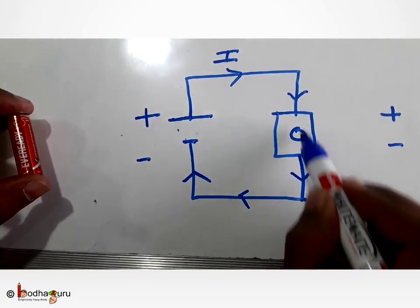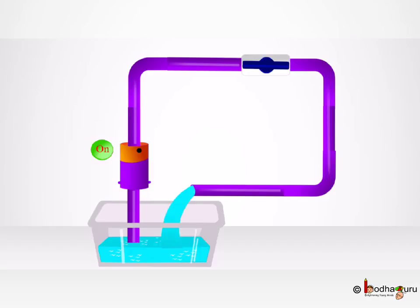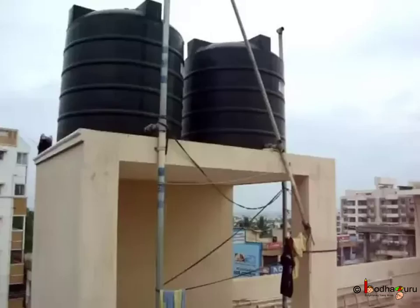So have you thought what makes the electric charge flow? The battery, right? So what did the battery do in this case? Remember our water pipe analogy. Water flows through the pipe from higher pressure side to the lower pressure side. The higher pressure can be because of the motor pushing the water or the overhead tank making the water flow due to the gravitational force.